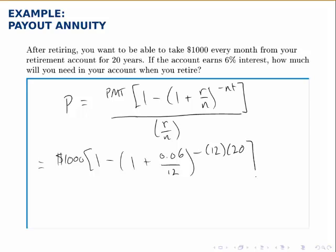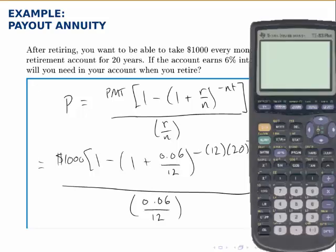Pay attention to that negative sign and be careful entering it into your calculator. Divided by R over N. This one is similar to the savings annuity in that all we need is the formula and it's fairly straightforward, but entering it in the calculator can be tricky. So I'll illustrate that. Again we want to take this step by step and be very careful.